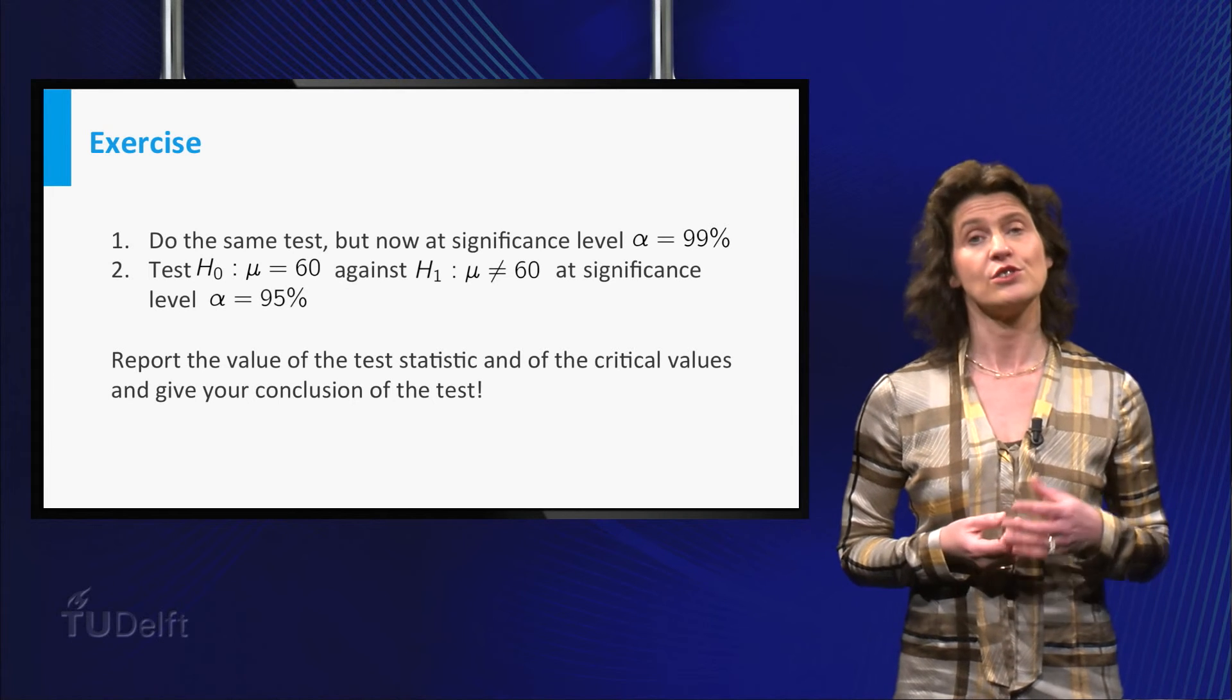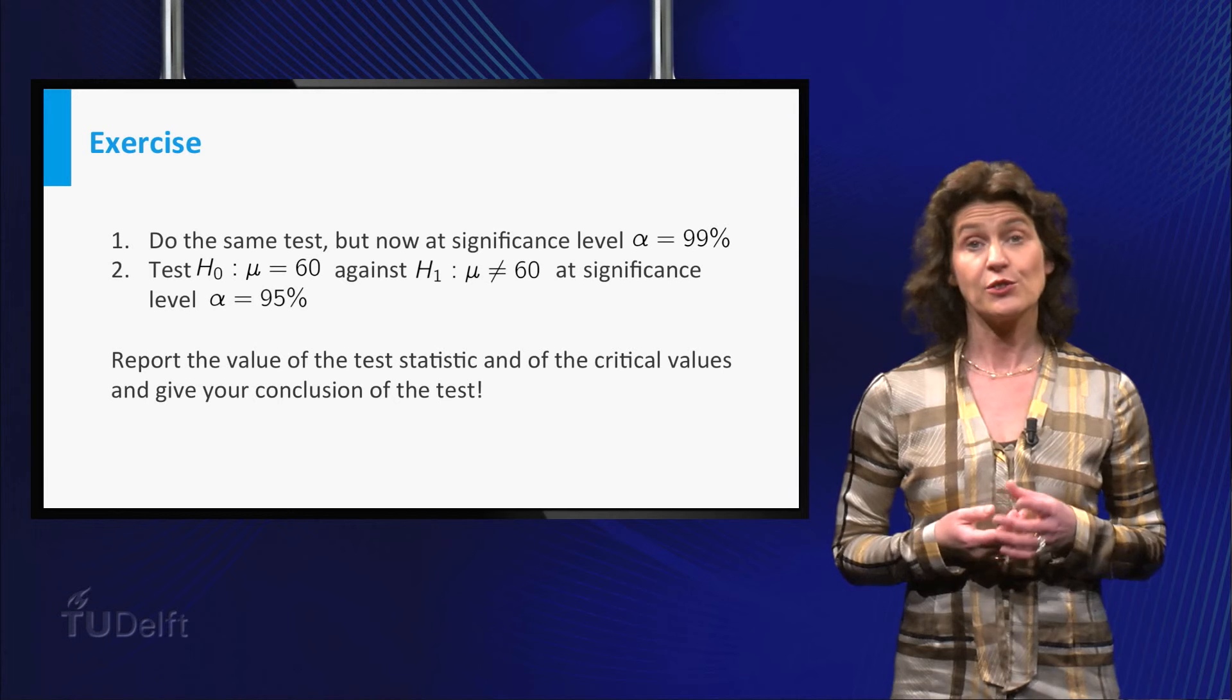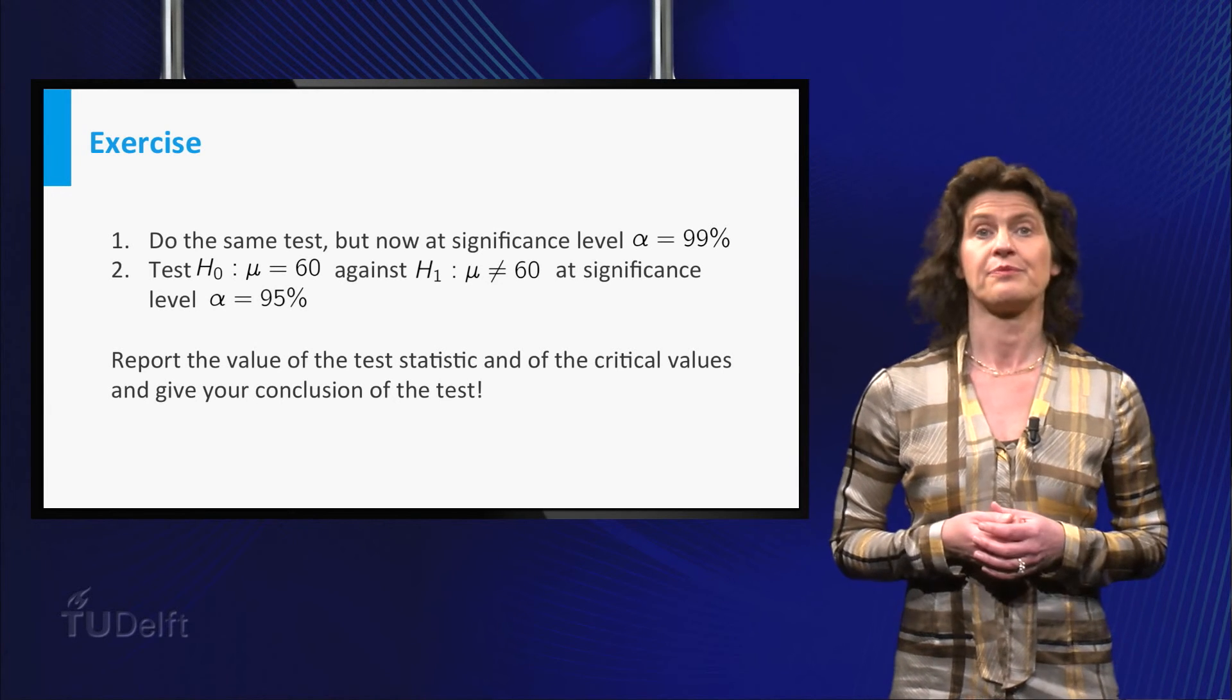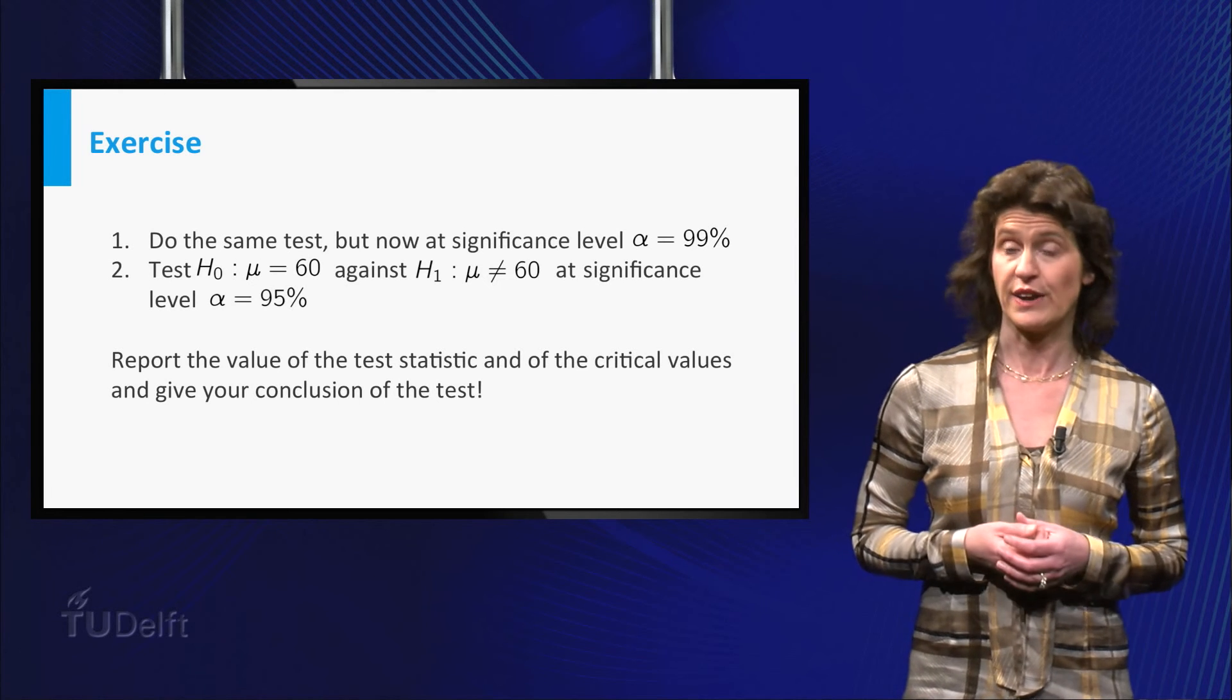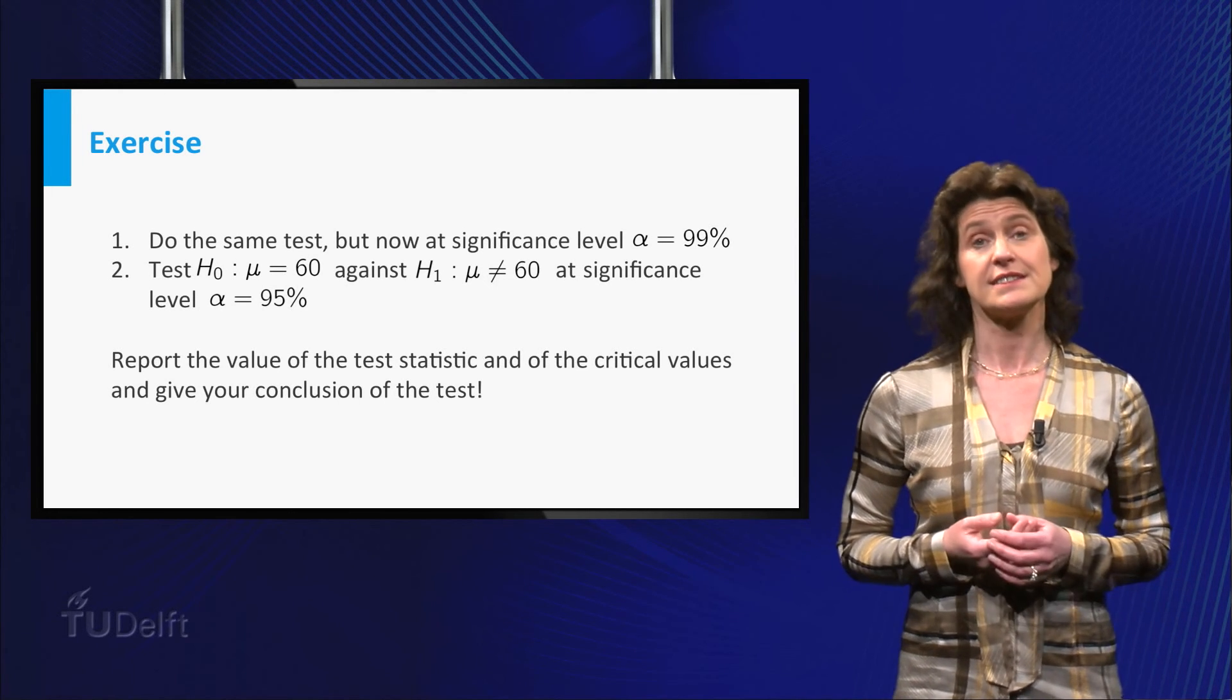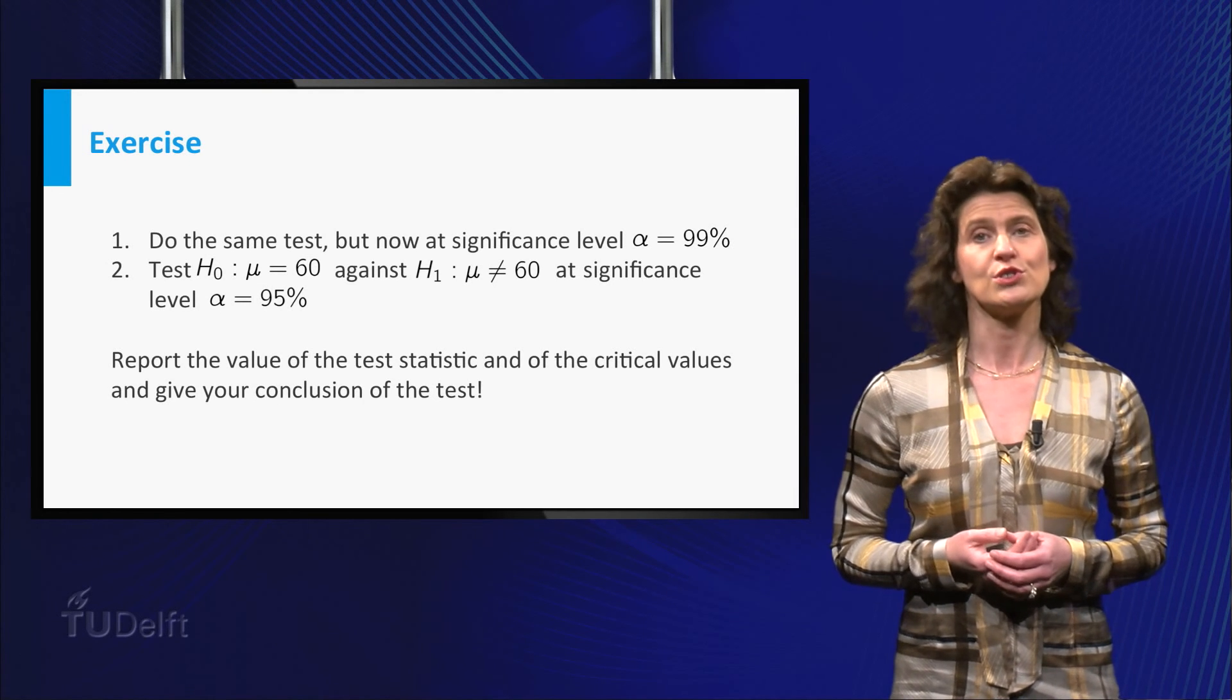And test the null hypothesis that mu equals 60 against the alternative hypothesis that mu is not equal to 60 at a significance level of 95 percent. Report the value of the test statistic and of the critical value for the test and give your conclusion of the test.